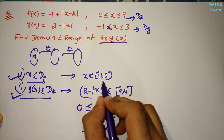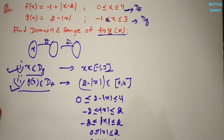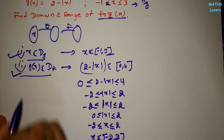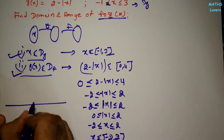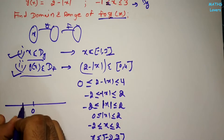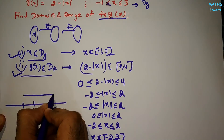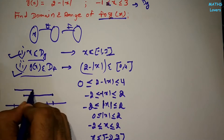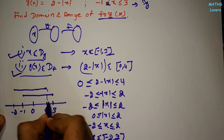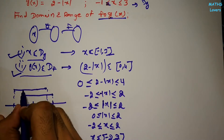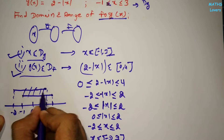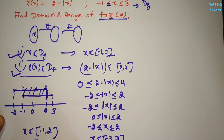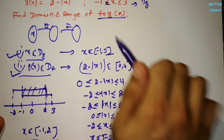From the first condition we got x ∈ [-1, 3], and from the second condition we got x ∈ [-2, 2]. Taking the intersection: [-1, 3] ∩ [-2, 2] = [-1, 2]. So the domain of f(g(x)) is x ∈ [-1, 2].